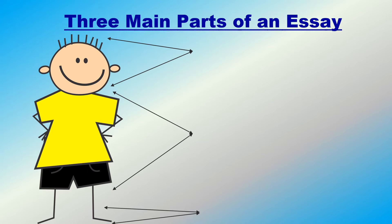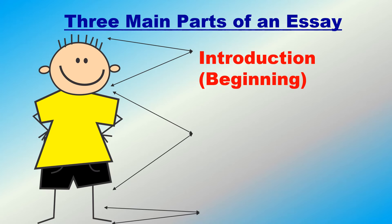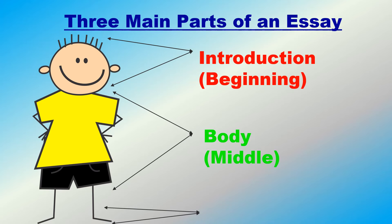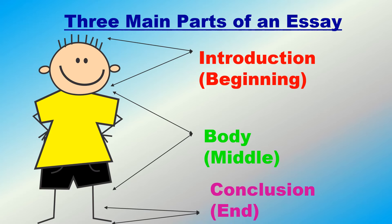Just like Bobby's body, you have to divide your essay into three main parts. Like Bobby's head, the first part of the essay is the introduction — it starts your essay. After the introduction, you go to the body, which is the middle and biggest part of your writing, just like Bobby's whole body. Finally, the last part is the conclusion, which ends the entire essay. So the three main parts of an essay are the introduction, the body, and the conclusion.